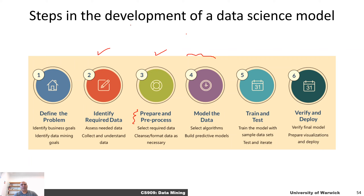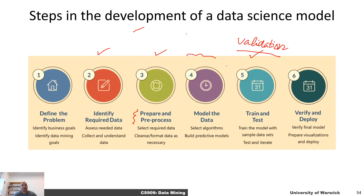Once we are done with the training, we can test it on a small part of the training data that we have not used for training. We have a big dataset and we can take a small part of it aside to do what is called validation. That is a required step, just to make sure that the machine learning model is able to learn something.